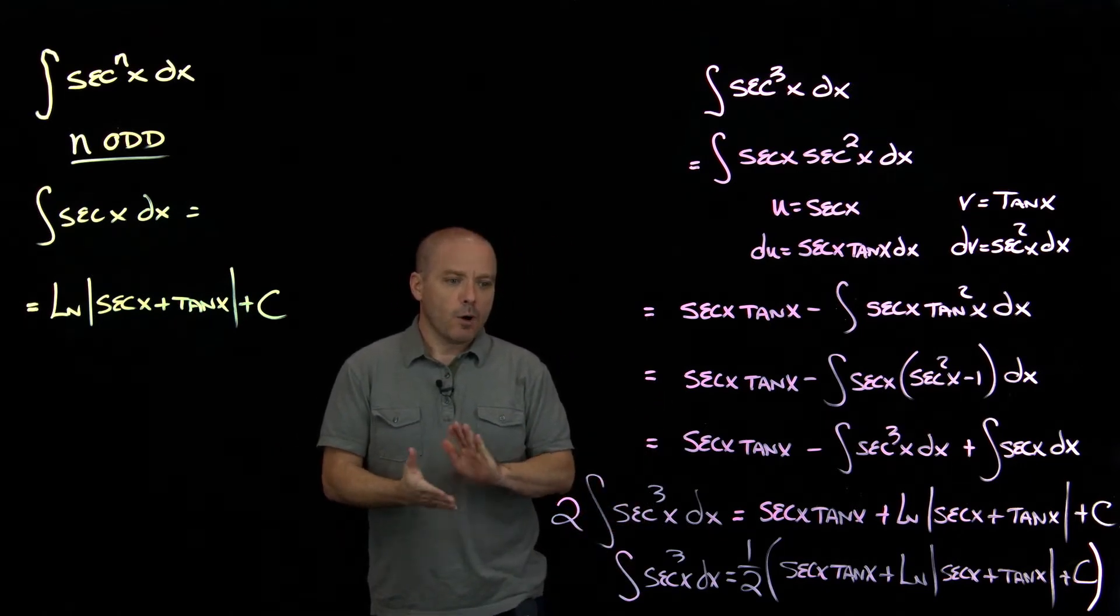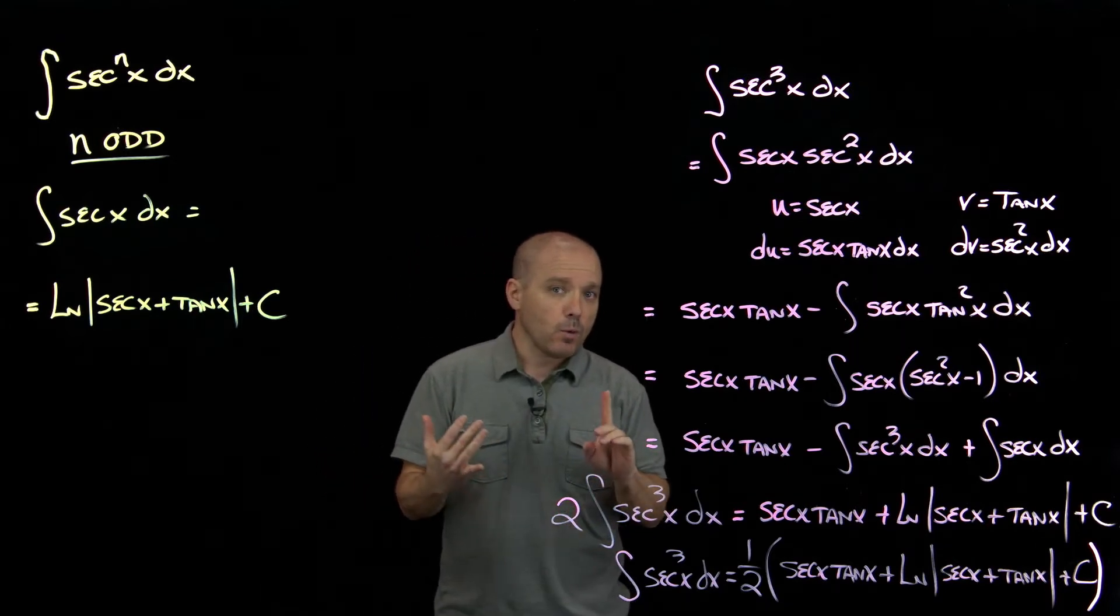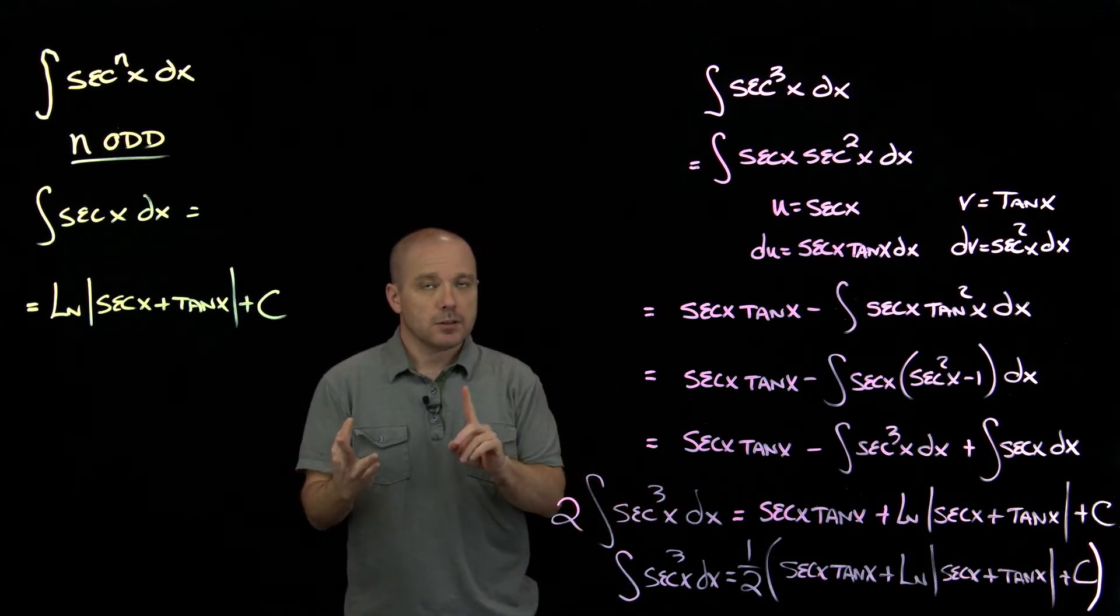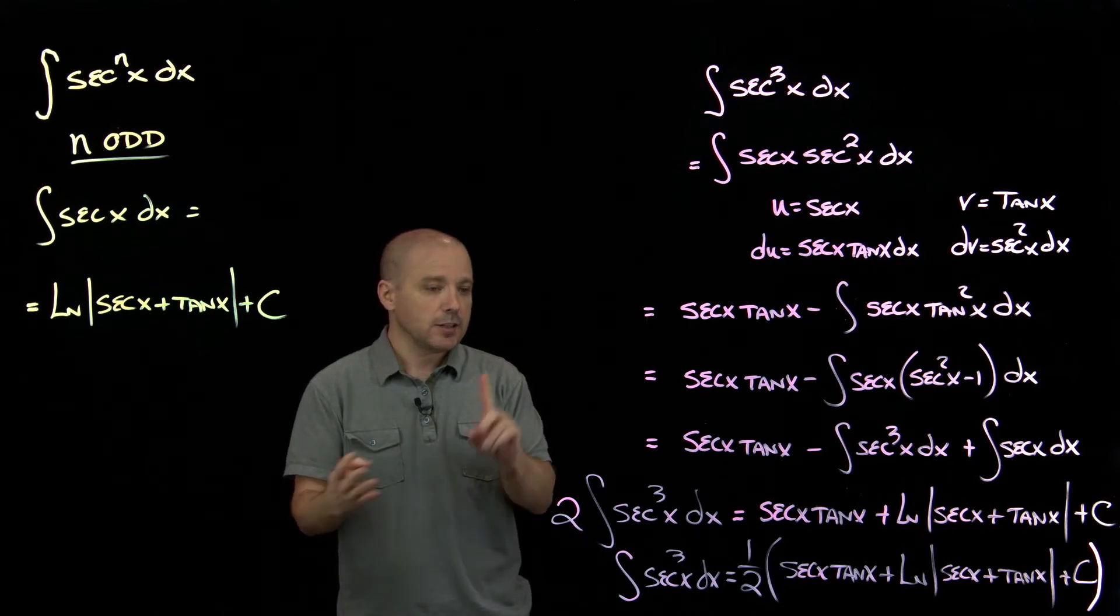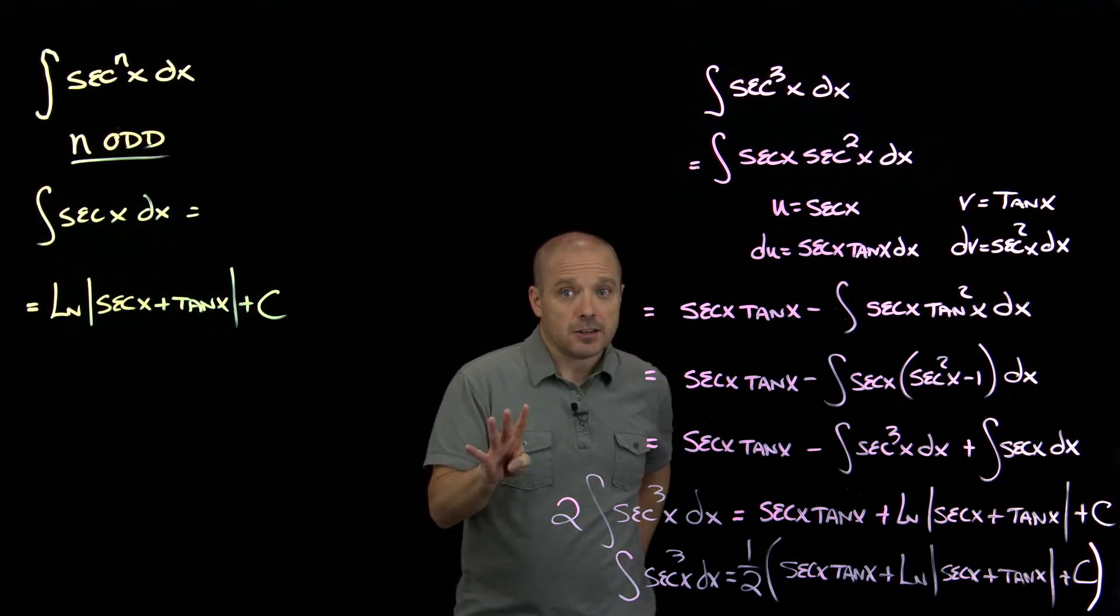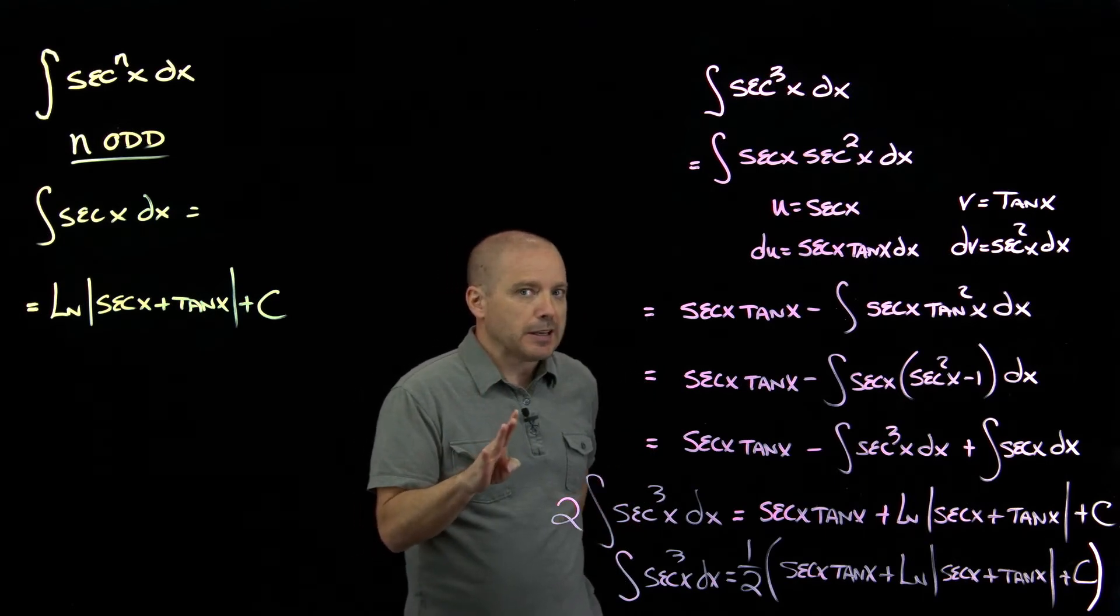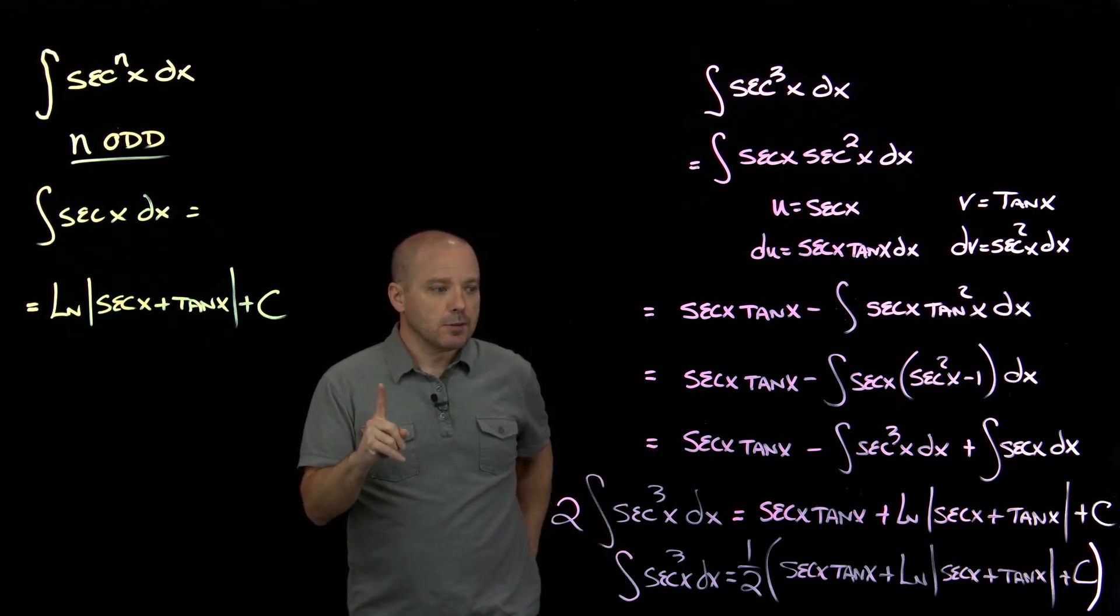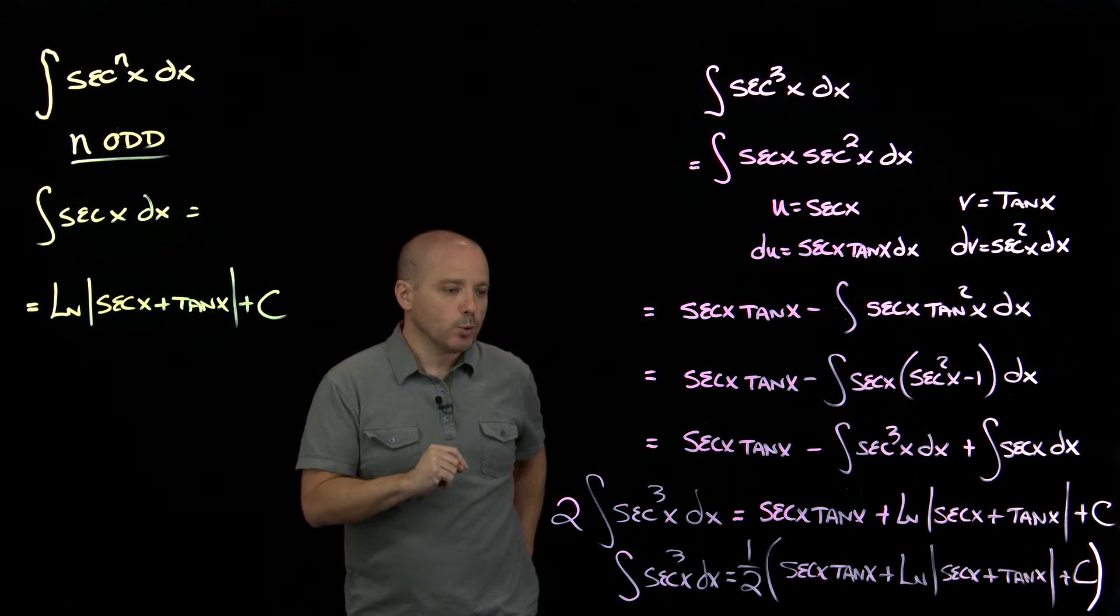So what we've seen now is that no matter what degree sine is, what degree cosine is, what degree tangent is, or what degree secant is, all of those have antiderivatives. And that's important to keep in mind because not everything has an antiderivative. So knowing that it can be done exactly is important.